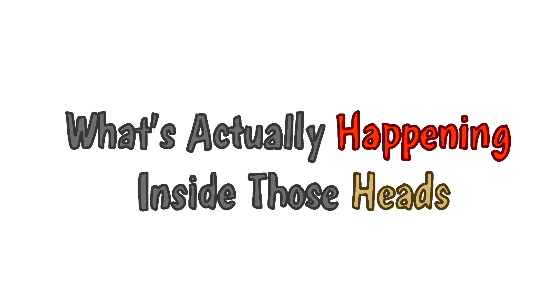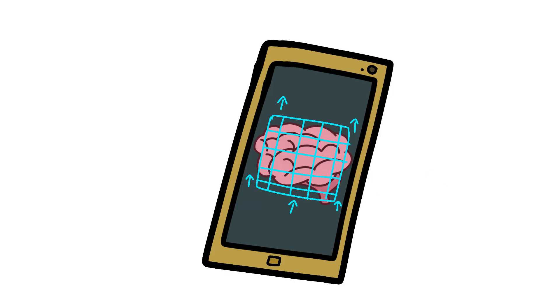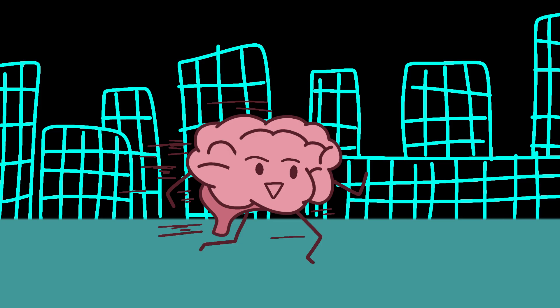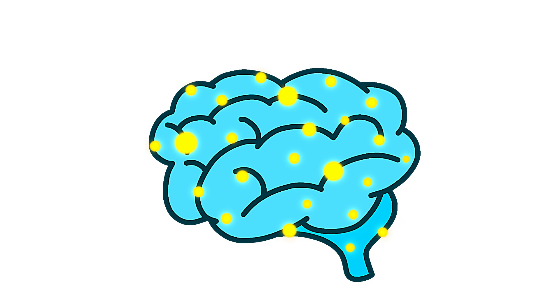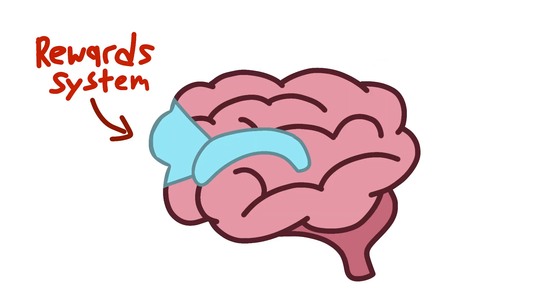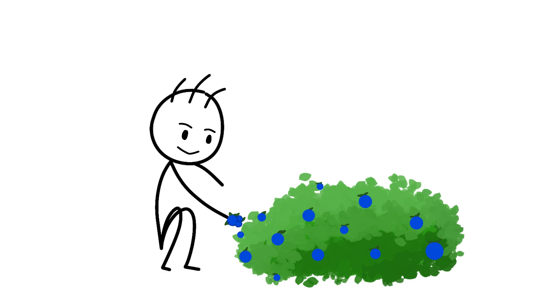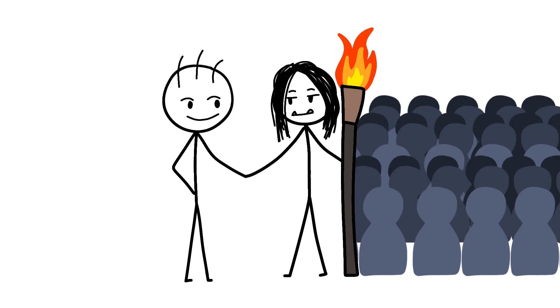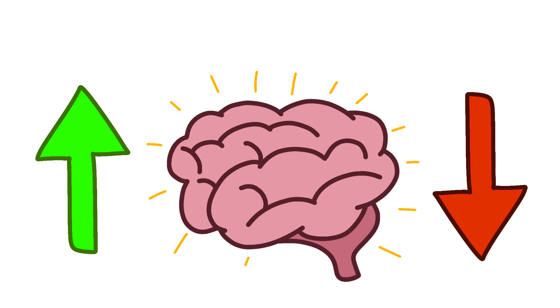What's actually happening inside those heads? The developing brain on smartphones isn't deteriorating. It's adapting at breakneck speed to a digital environment that changes faster than evolution ever intended. The neuroplasticity of teenagers, already cranked to 11, meets technology that hijacks reward systems designed for finding berries and making friends in tribes of 150. The real data shows brains developing different strengths and weaknesses than previous generations.